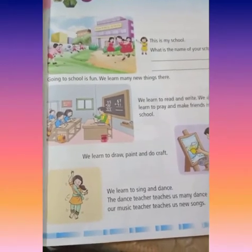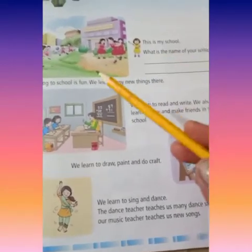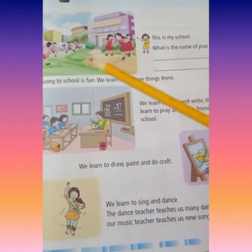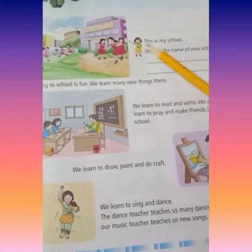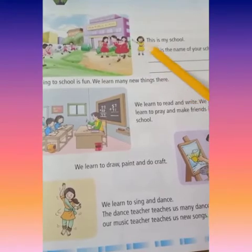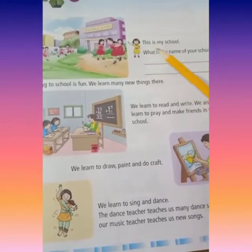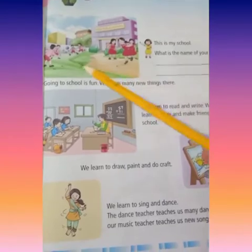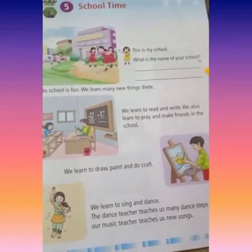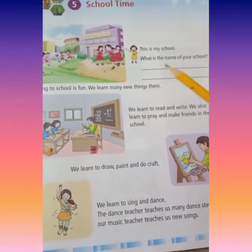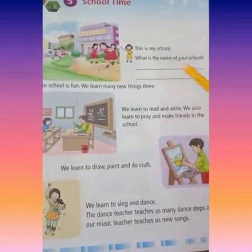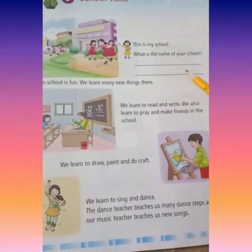Kaisa hota hai school ka samayi? Let's start. Here is a picture - picture of school. This is a girl. She said, this is my school. She is showing - yeh dikha rahi hai - this is my school. Yeh meera school hai. What is the name of your school? The name of our school is Suraj School Rewaadi. Right here - Suraj School Rewaadi.